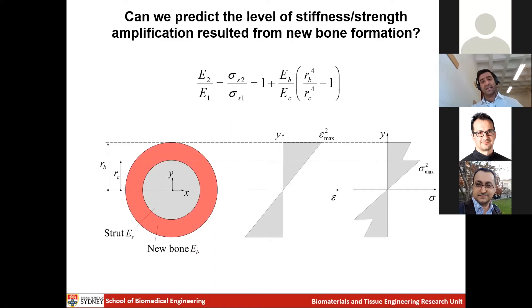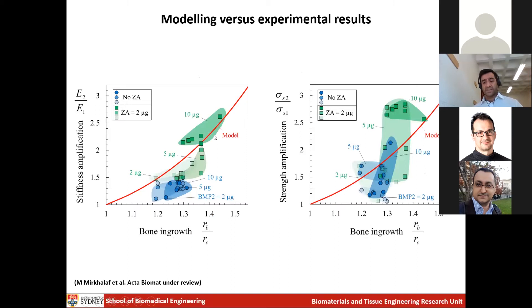I was thinking: can I capture this in a mechanical model? In practice we cannot harvest the sample and do a mechanical test on it. We need a fast tool to predict the level of stiffness and strength amplification inside the scaffold as bone grows. What we need is CT imaging to get values of new bone formation, and based on a model I recently developed, we can predict stiffness and strength amplification based on the properties of the bone, the ceramic, and the volume of new bone ingrown inside the material. The comparison between model and experimental results was quite encouraging.